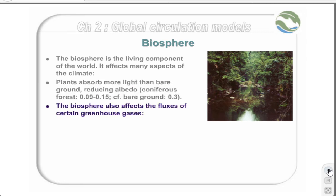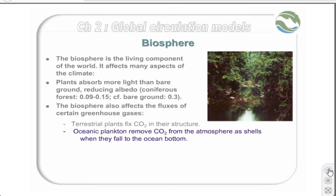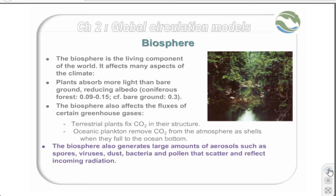The biosphere also affects the fluxes of certain greenhouse gases. Whilst terrestrial vegetation can fix a certain amount of carbon in its structure, many species of plankton utilize carbon dioxide in the formation of their carbonate shells. When these plankton die, their shells sink into the ocean bottom, effectively removing it from the system, and reducing the atmospheric concentration of gases by at least four-fold. The biosphere also generates large amounts of aerosols, such as spores, viruses, dust, bacteria, and pollen, that scatter and reflect incoming radiation.